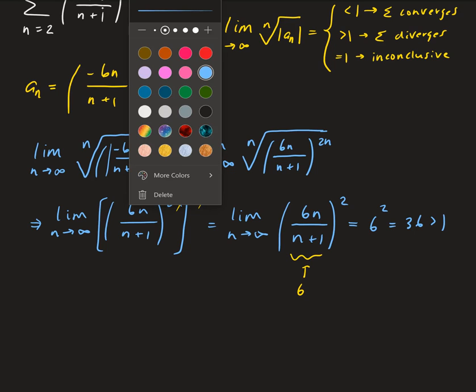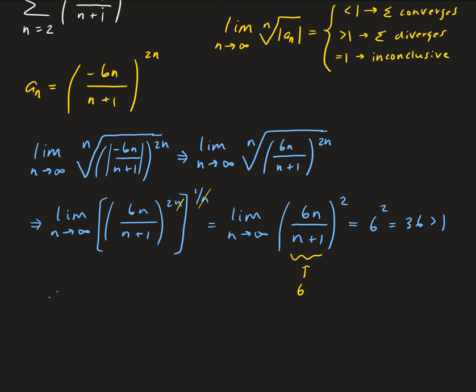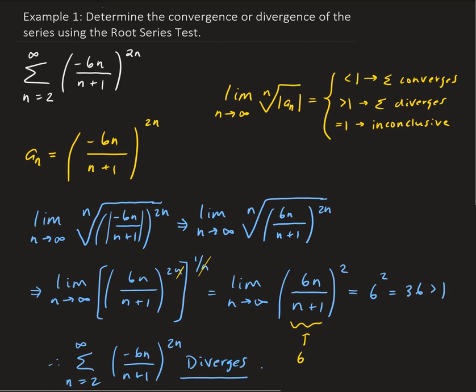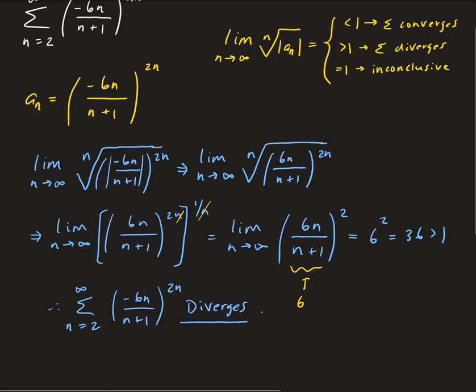So therefore, we're going to get divergence. Minus 6n over n plus 1 to the 2n diverges. So that's how this root test works.